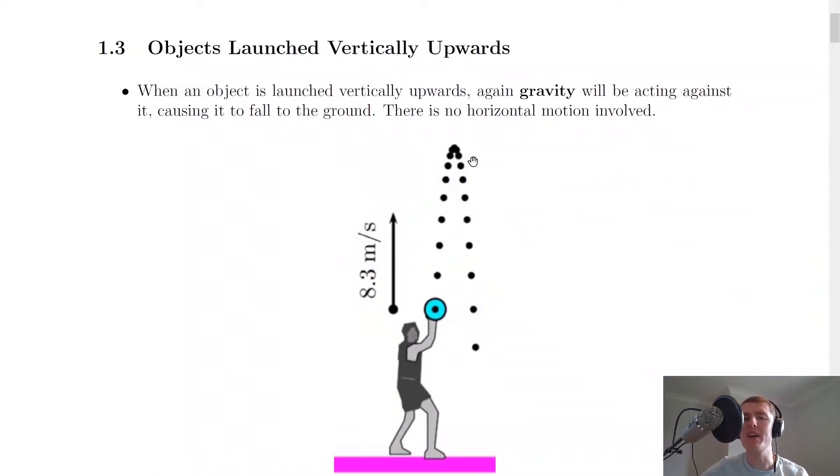When an object is launched vertically upwards, again gravity will be acting against it causing it to fall to the ground. There's no horizontal motion involved.